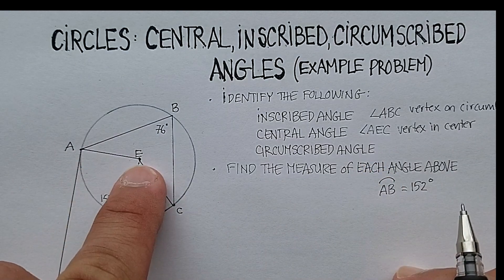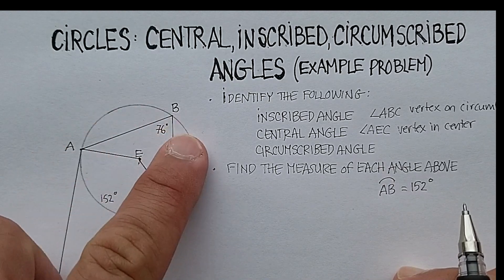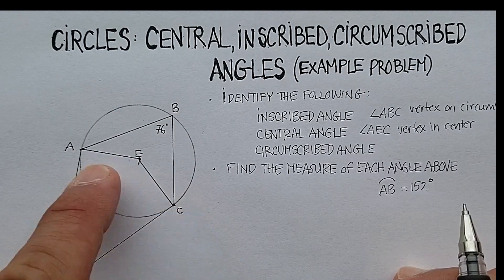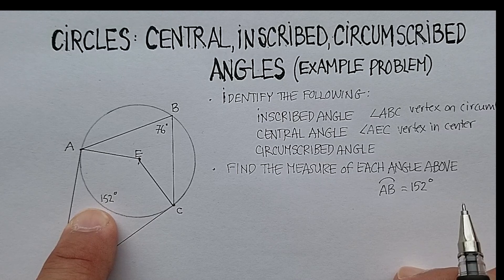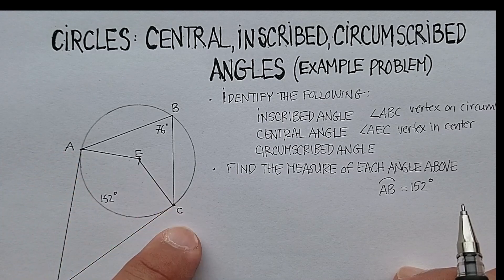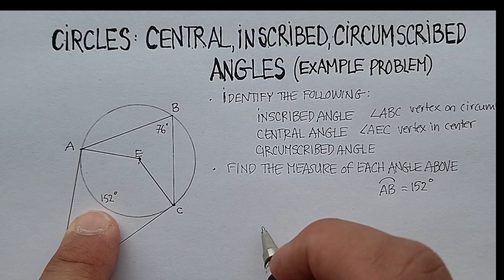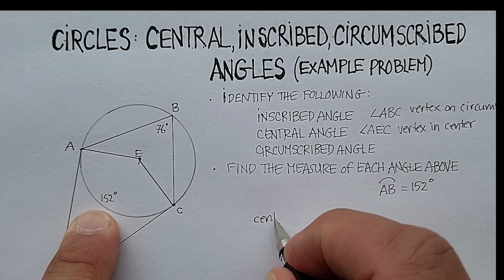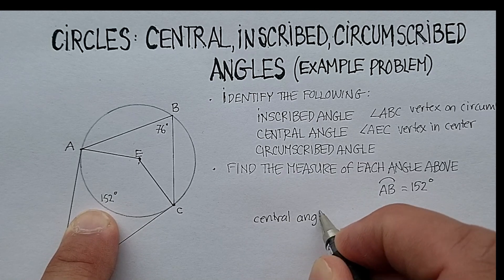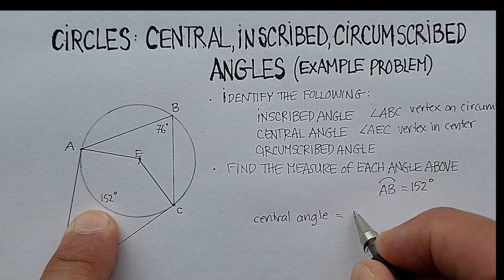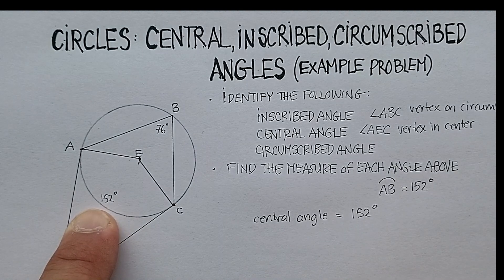So because the vertex is in the center, the arc that it intercepts is arc AC, which just happens to be the same thing as the arc for angle ABC, which means that the measure of angle AEC, the central angle, is exactly the same as the intercepted arc. So central angle AEC equals 152 degrees.